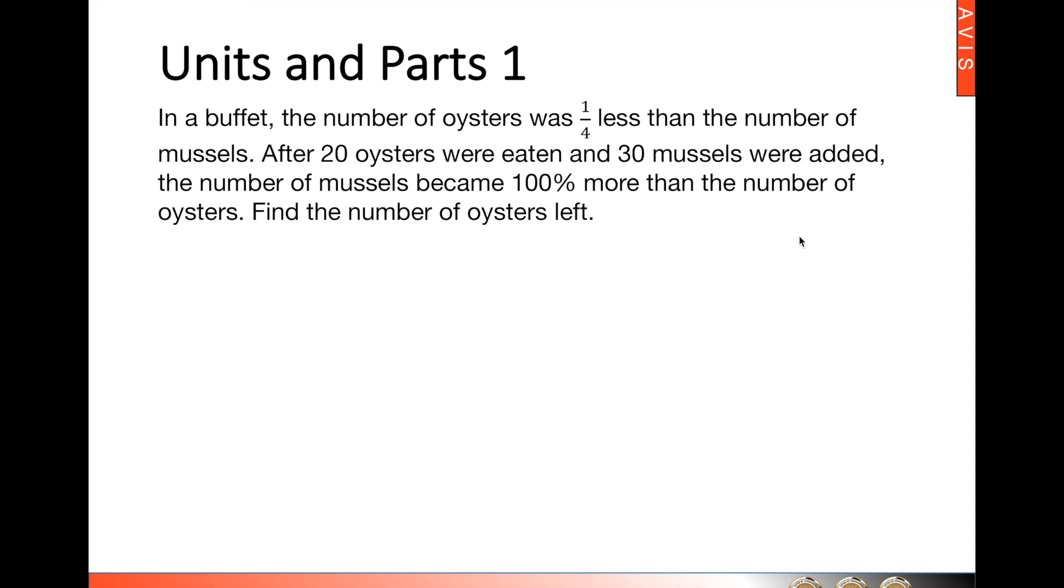First, we need the before proportion. We were told that the number of oysters was one quarter less than the number of mussels. Hence, the before ratio for oysters to mussels should be 3 is to 4. Then we show that 20 oysters were eaten and 30 mussels were added.